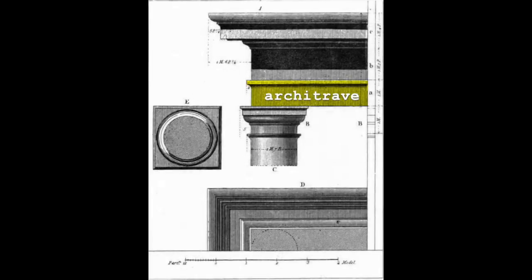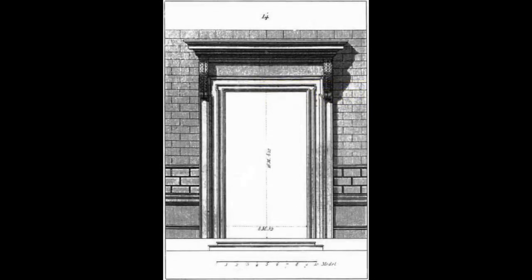In classical architecture, the word architrave refers to the beam just above the columns at the lower third of the entablature on or in a building. It can also refer to the trim or casing that surrounds a door or opening.